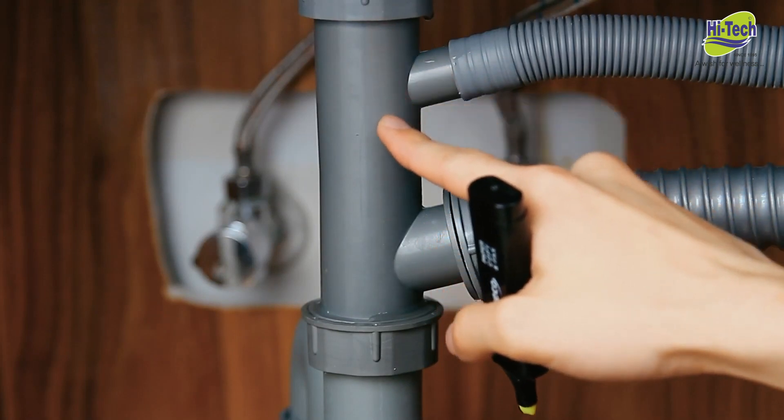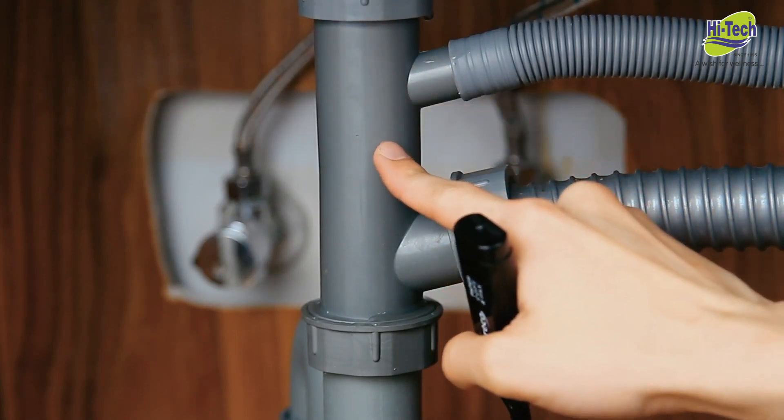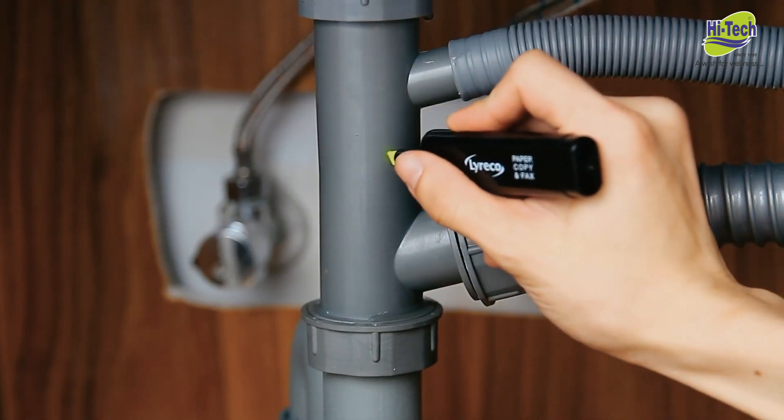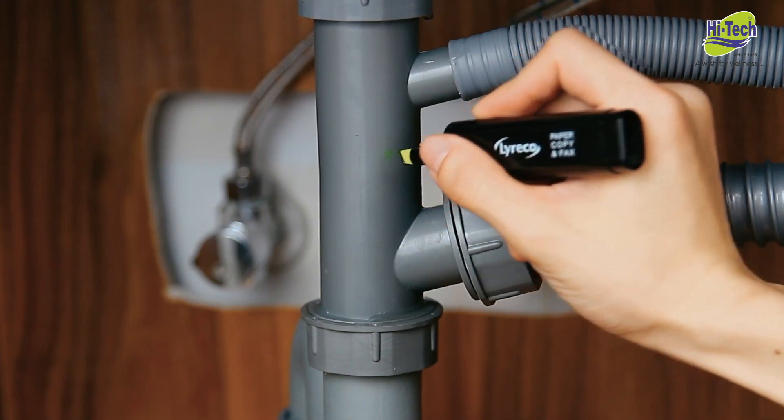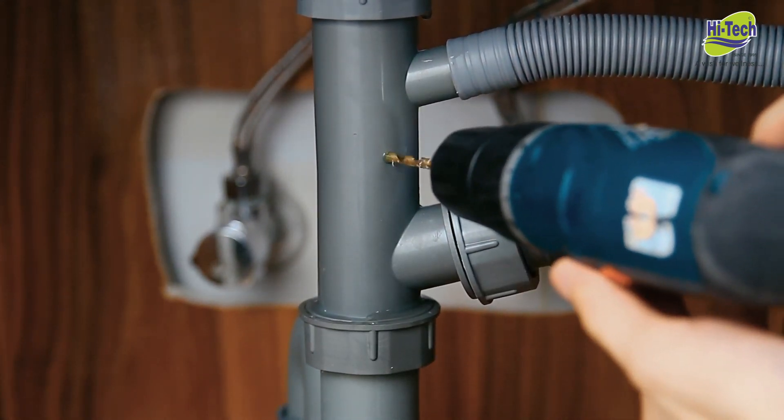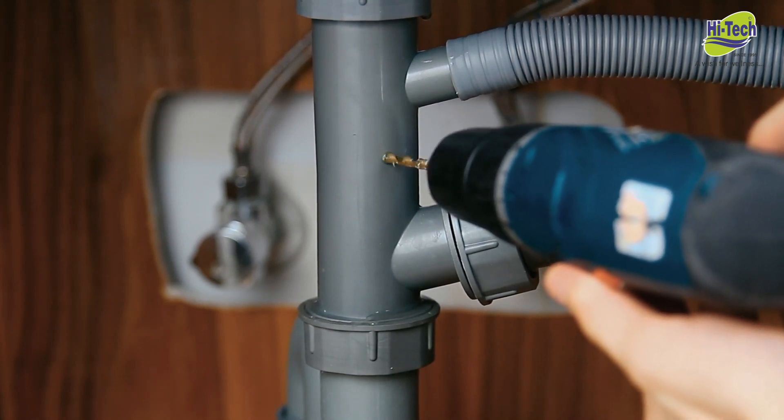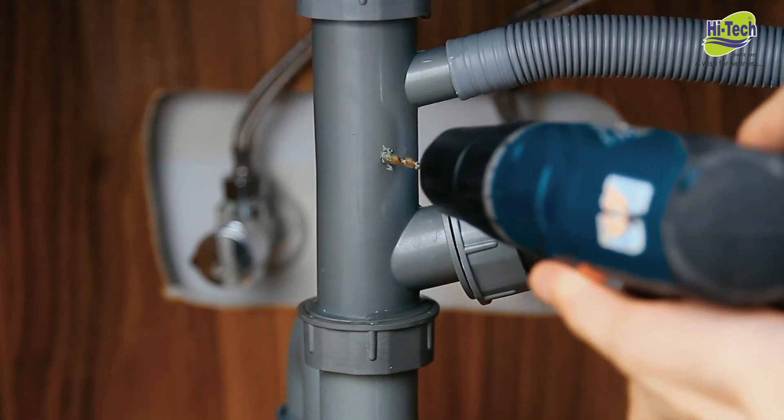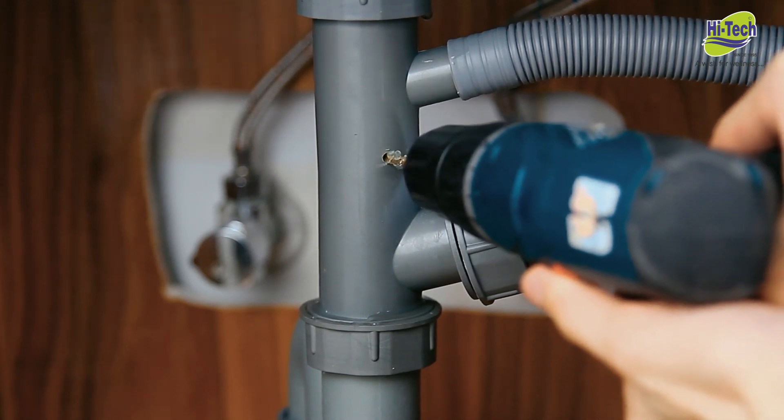The drain saddle can fit into any one and a half inch straight length of pipe before the P-trap. Mark a preferred location of drain saddle with a pencil. Use the power drill with quarter inch drill bit to drill a hole on the mark. Be careful to only drill one side of the pipe.